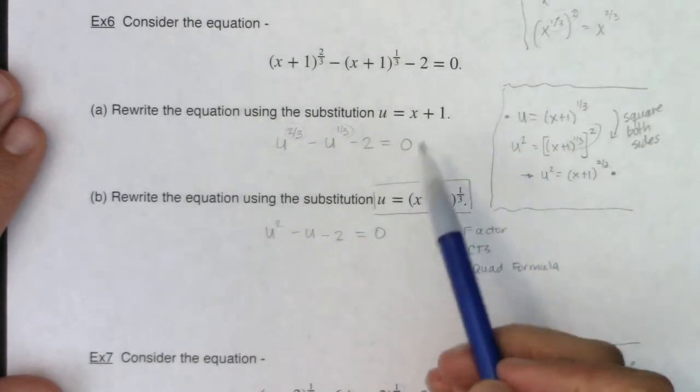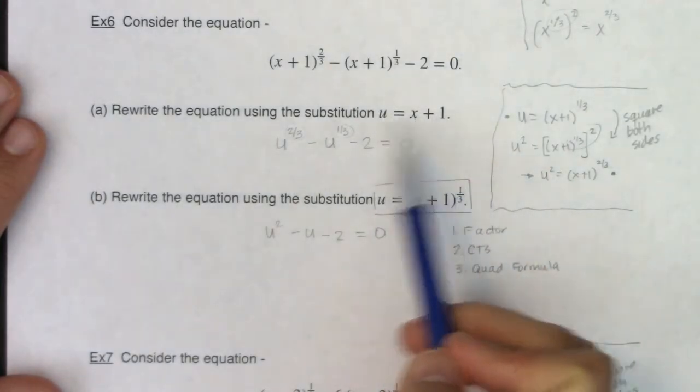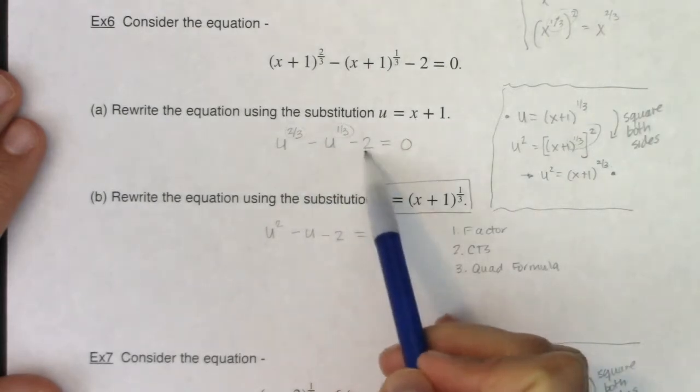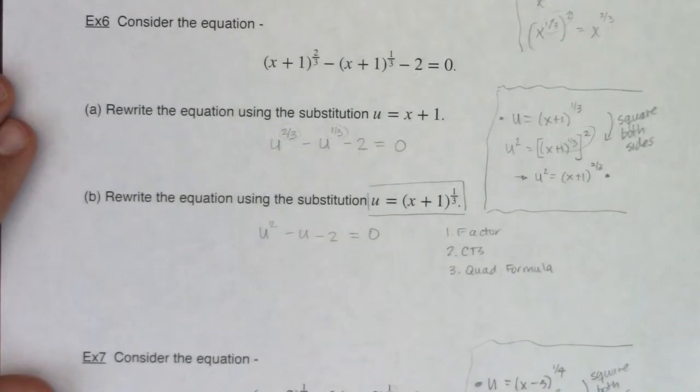We saw in example 6a I didn't pick the right u substitution. If I just picked x plus 1 I did not get a nice quadratic equation. So what's the catch? How do you make this work? Well here's the catch.